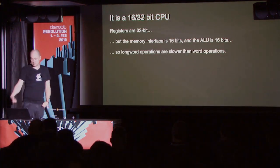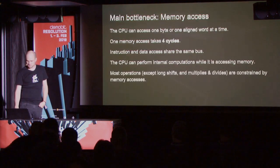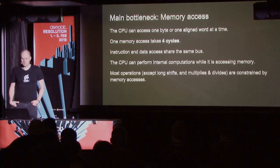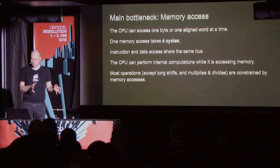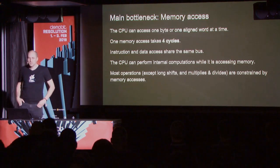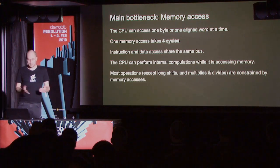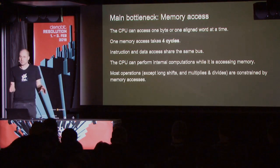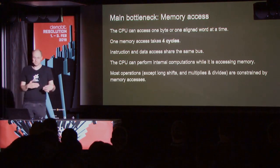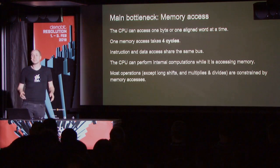Long word operations will be slower than word operations. The main problem is memory access: the CPU can only access one byte or one aligned word at a time, and one memory access takes four cycles because the processor is built that way. Because of this, most operations — except something like a multiply where the processor crunches numbers internally — will have performance constrained by the memory accesses needed to complete the operation.